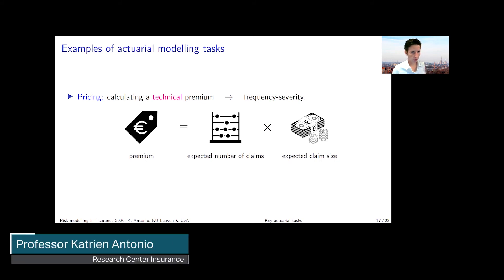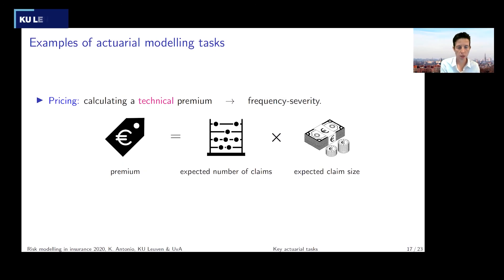When we look at actuarial modeling tasks, just a few examples where predictive modeling, where building risk models is coming into play. First of all, you can think about the example of pricing an insurance product. Pricing an insurance product relies a lot on predictive modeling techniques. Why is that?